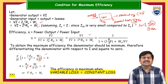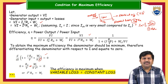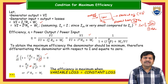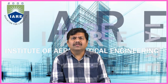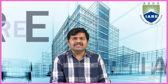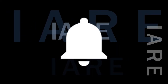To achieve maximum efficiency, variable losses must equal constant losses. Two conditions were studied today: (1) maximum efficiency when variable losses = constant losses (I²Ra = Wc), and (2) maximum output power when back EMF Eb = V/2. We have covered various losses in DC machines, constant and variable losses, and the conditions for maximum efficiency and maximum output power. Thank you for watching — like, share, subscribe, and hit the bell icon for more updates.